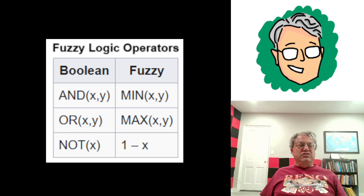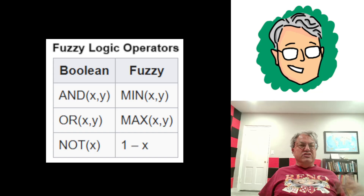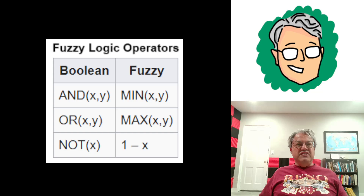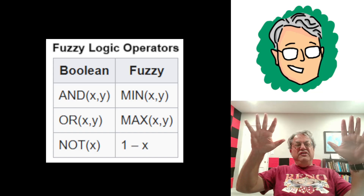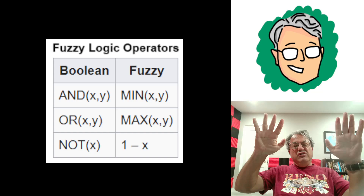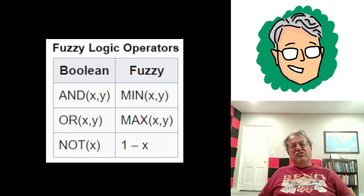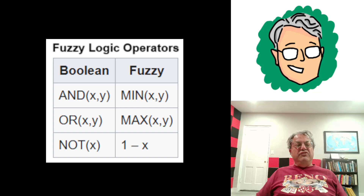Just like there are rules for Boolean algebra, there are rules for fuzzy logic. In Boolean logic, 'and' is false if and only if at least one of them is false, and true only if both are true. For example: 'I'm holding up my left hand and I'm holding up my right hand' — I have to be holding up both. If I'm just holding up my right hand, it's false that I'm holding up both hands. So there's only one case in which the conjunction is true: both X and Y are true.